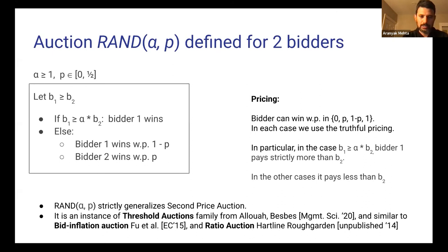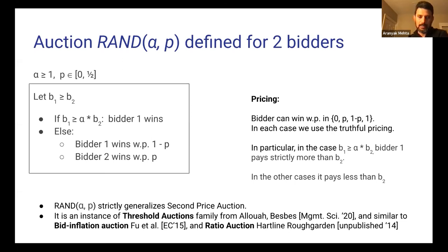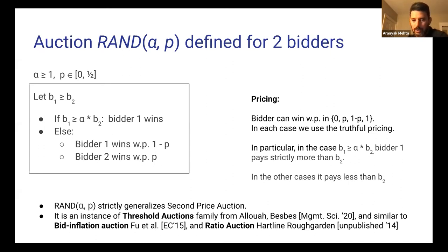Two quick notes: this auction strictly generalizes the second-price auction — if alpha is 1, this is the second-price auction. Similar auctions have been studied in the literature before; in fact it is an instance of the family of threshold auctions from Aloha-Besbes in Management Science, and other papers have considered similar auctions as well.